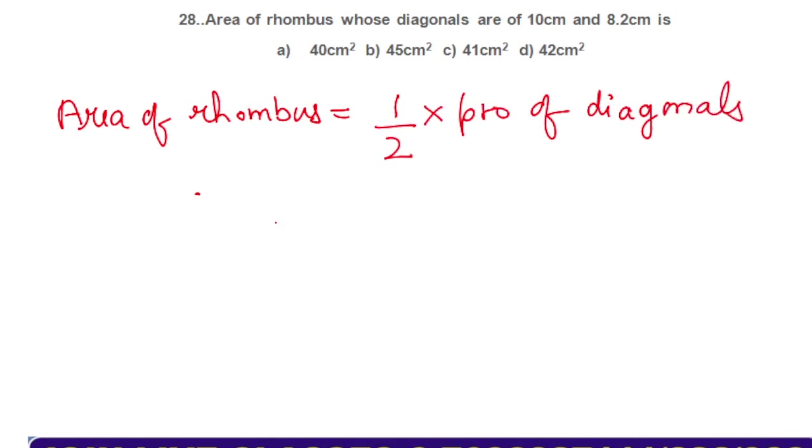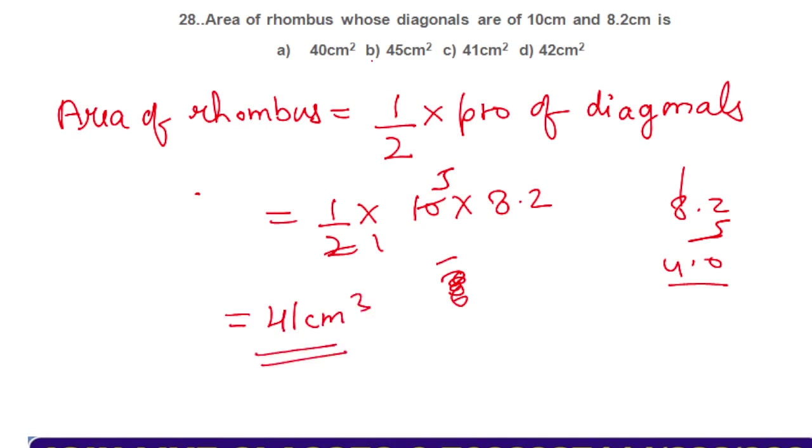Half, product of diagonals is 10 and 8.2. 2 into 5 is 10, 8.2 into 5, sorry, it will be 41. This will be 41 centimeter square will be the area. Option number C.